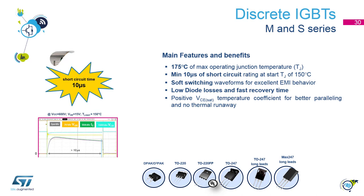These IGBTs are optimized for lowest switching losses. The S series features improved conduction losses thanks to low VCE(sat). A long 10 µs short circuit rating makes them very robust against motor stall or short circuit conditions. The optimized freewheeling diode for motor control applications ensures low diode losses and fast recovery time with the right softness. The M and S series are tailored to improve efficiency in motor control applications across the whole range of switching frequencies up to 20 kHz.